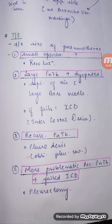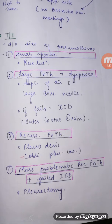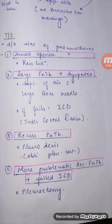Treatment depends on the size. For a small spontaneous pneumothorax — patient is almost asymptomatic or has mild dyspnea — we wait and watch, as spontaneous resolution usually occurs. For a large pneumothorax with symptoms, first try a large bore needle puncture; if that doesn't work, proceed to ICD (intercostal drainage) or chest tube placement.